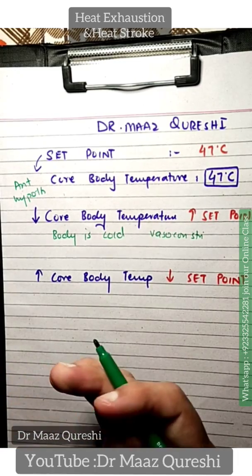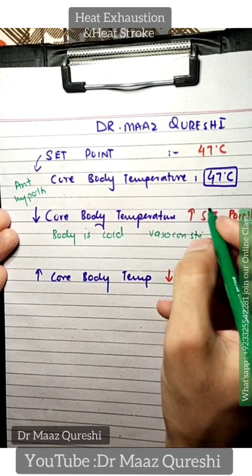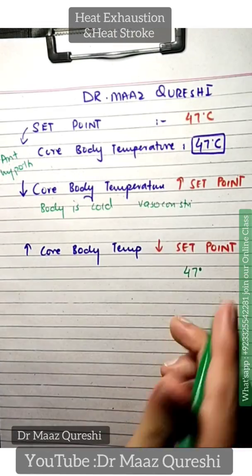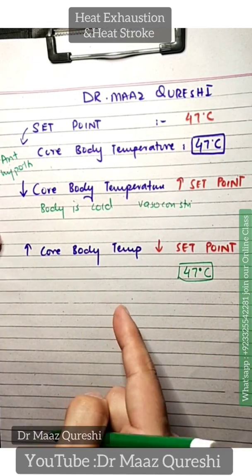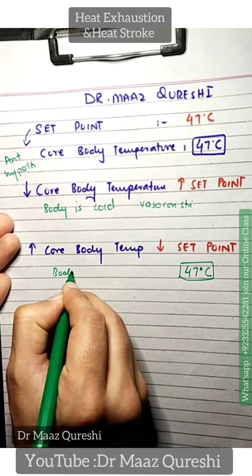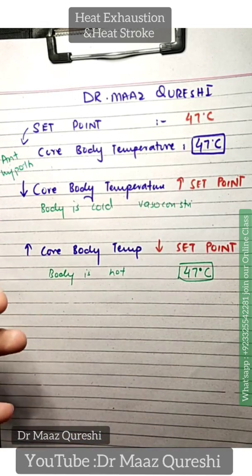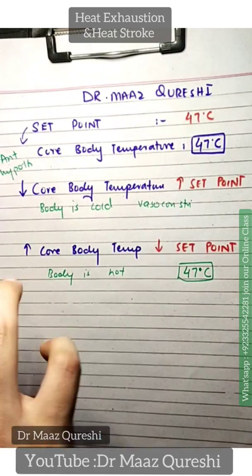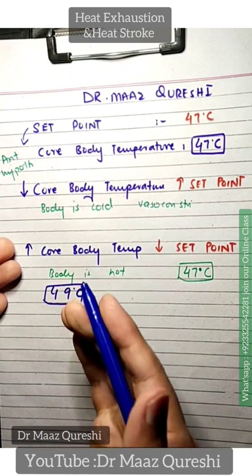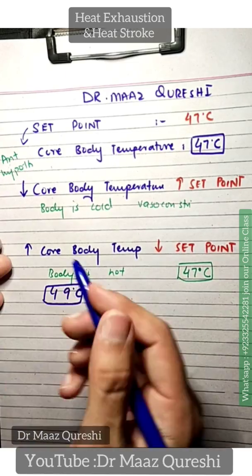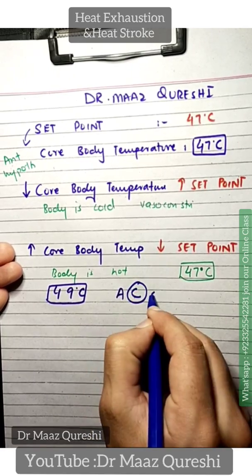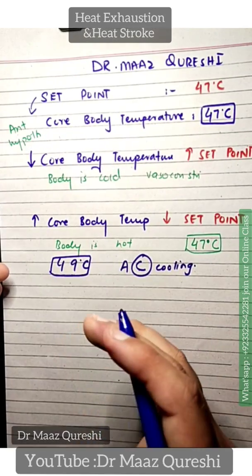When the core body temperature is high and the set point is low, that means your body temperature is elevated and your body is hot. So now you need to get rid of that extra heat. The anterior hypothalamus, which is responsible for cooling, is activated. It cools the body by sweating.